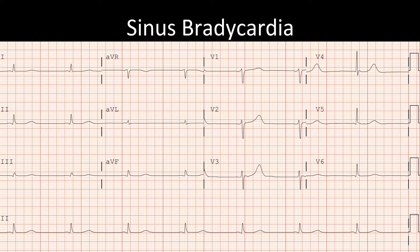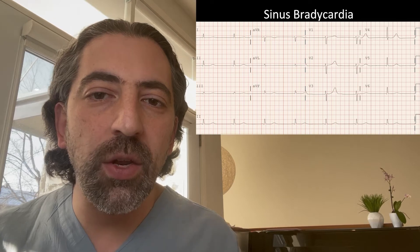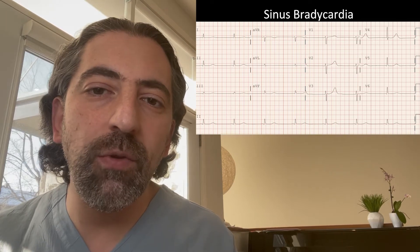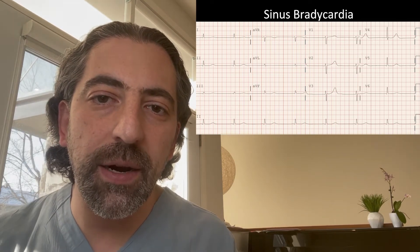In this particular ECG, we see that the P-wave is positive in leads 1 and 2, so it's originating from the sinus node. There is a P-wave before every QRS and a QRS after every P-wave, so conduction is maintained. However, the rate of the P-waves and the QRSs is 43 beats per minute, so this is sinus bradycardia.